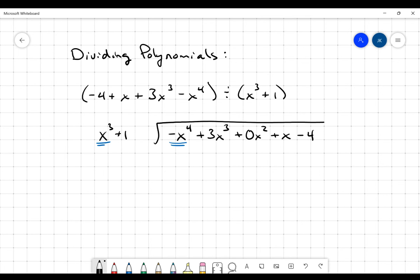So I asked myself, what do I have to multiply by x cubed to turn it into negative x to the fourth? And the answer is negative x. And I'm going to put that negative x above the x in the dividend. I'm going to line up the degrees. It just helps me organize things. It's not necessary to do it that way, but it is helpful.